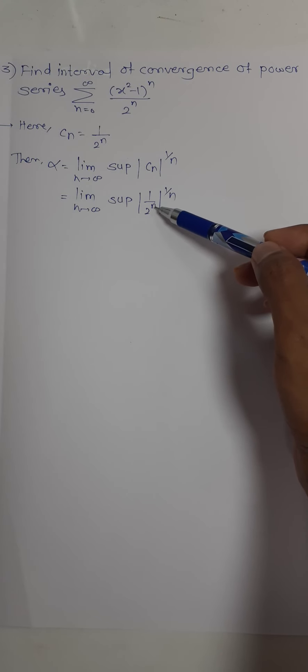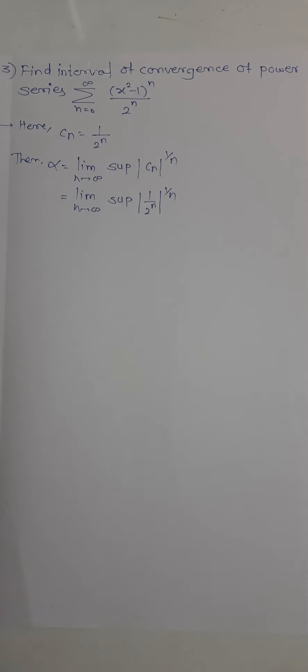n and 1 by n cancel each other, so we have limit as n goes to infinity, supremum of 1 by 2. 1 by 2 is constant, and applying the limit gives simply 1 by 2. Therefore, the value of alpha is 1 by 2.